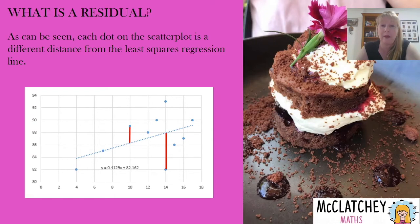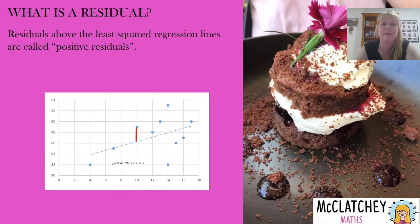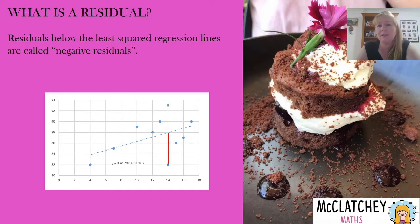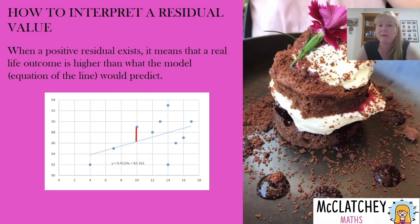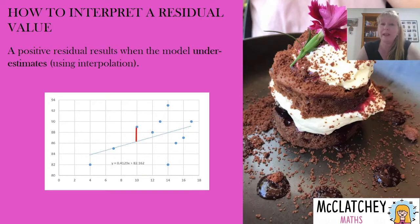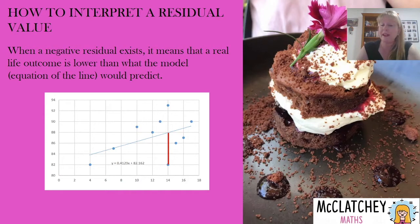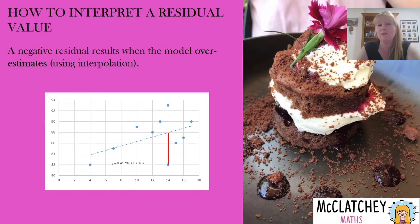There are going to be differences between what happens in real life and what a model is going to be predicting — we see that with the weather all the time. Residuals that fall above the line are called positive residuals, and ones below the line are called negative residuals. When we've got a positive residual, that means our real life event — the data we actually collected — is going to be higher than what our model would predict. In other words, a positive residual means that our model is going to underestimate when we use interpolation. When we have a negative residual, that means our real life event ended up being lower than what our model is predicting, meaning our model is overestimating using interpolation.